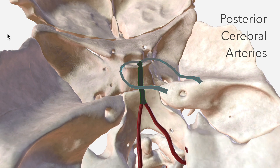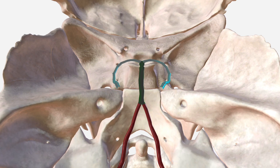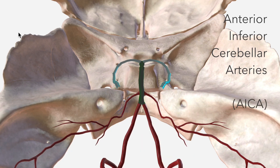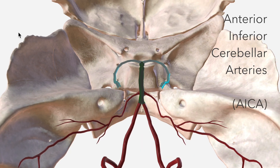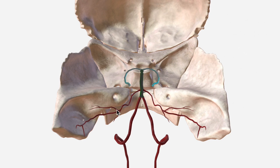It throws off four sets of branches along the way. The first of which is the anterior inferior cerebellar artery, which supplies the inferolateral aspects of the cerebellum. That's the anterior inferior cerebellar arteries.